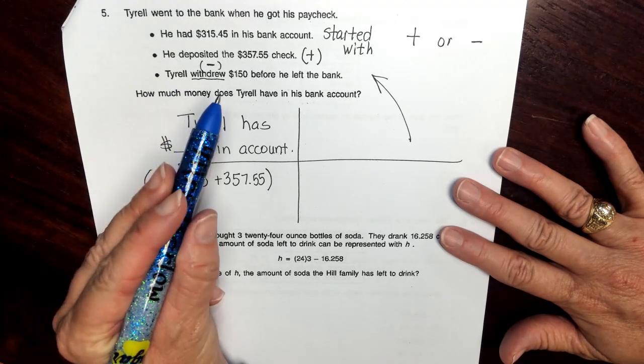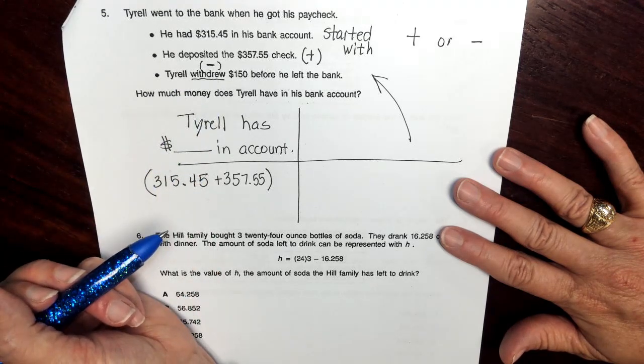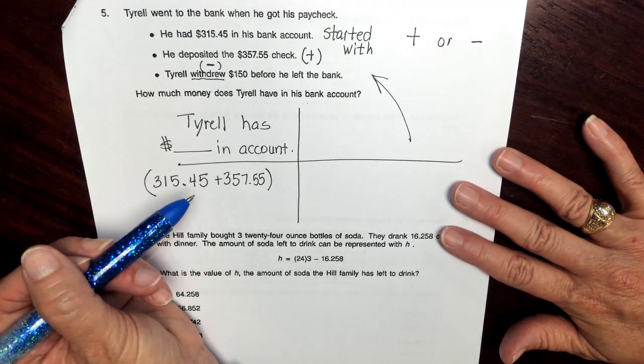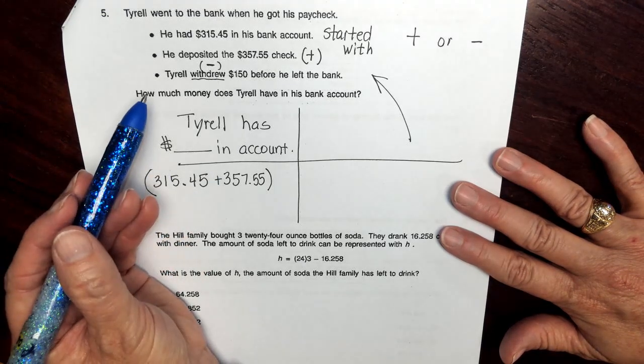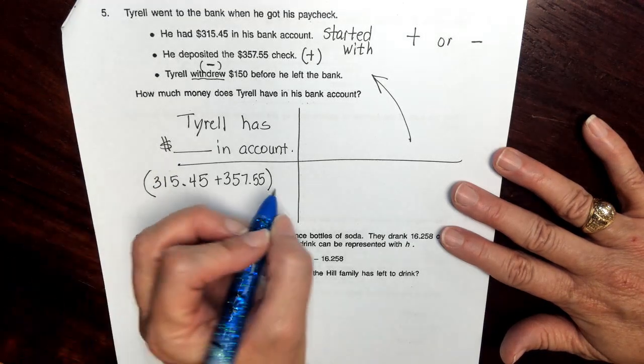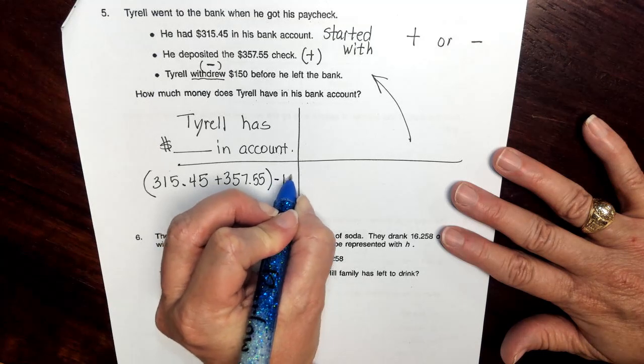And finally, we're withdrawing $150. So I have to think about, well, where is that going to come into our number sentence? So if I'm withdrawing, I'm going to withdraw after I add the total. So the $150 is going to go at the end.